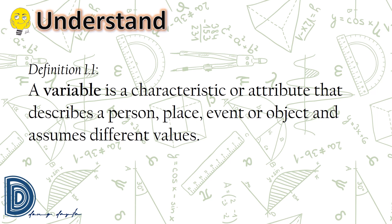Okay, let us have definition 1.1. A variable is a characteristic or attribute that describes a person, place, event, or object and assumes different values. So we understand variable in statistics and probability in the same way we use them in algebra and other mathematics subjects. We use variables to represent an attribute that describes a person, event, or object, and it assumes different values.